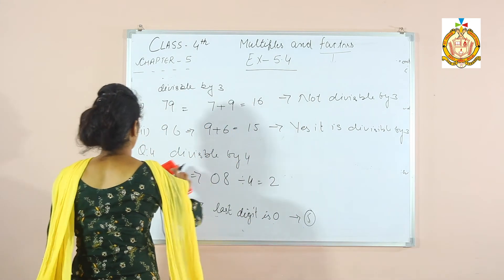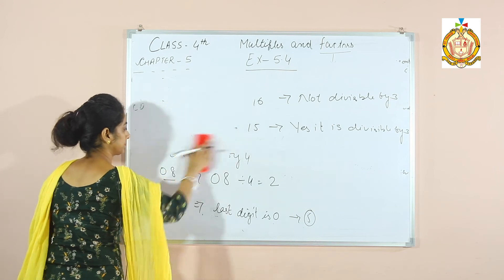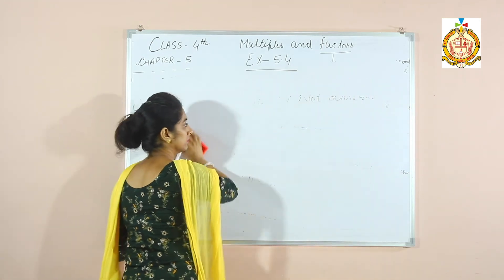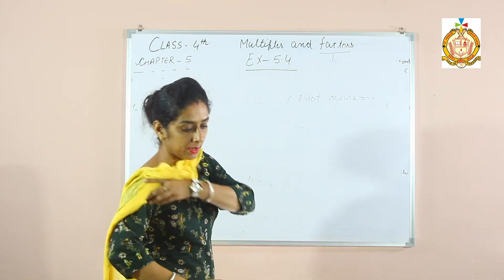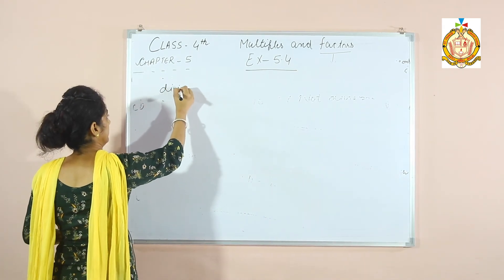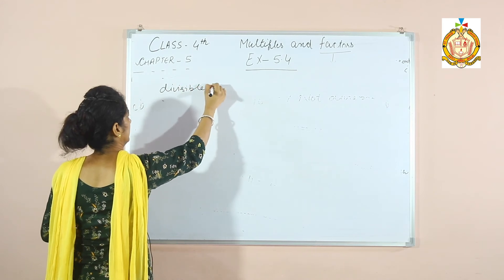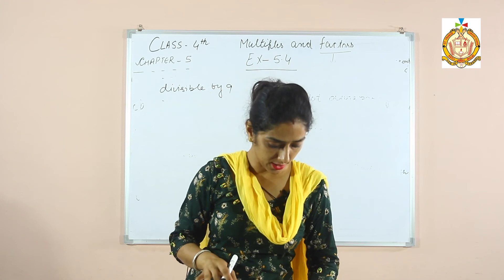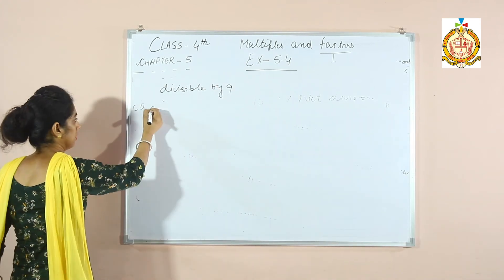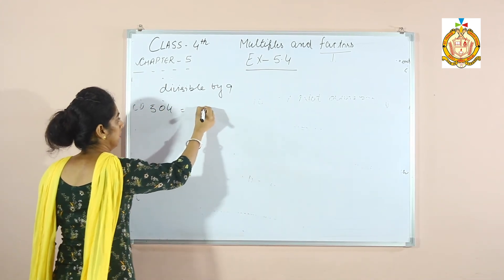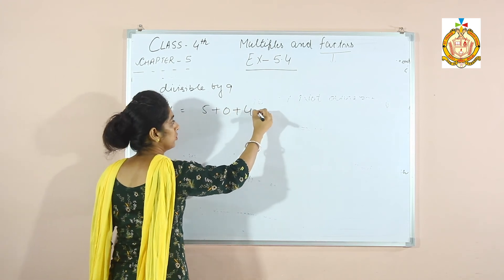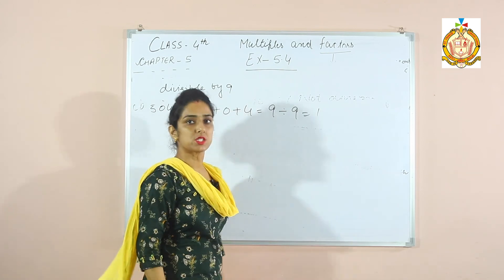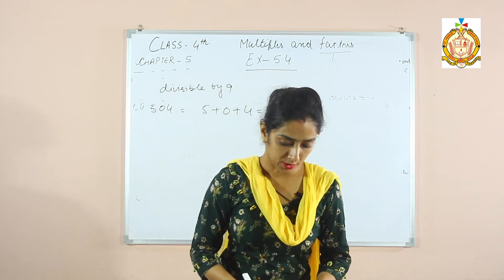For divisibility by 9, we check the sum of digits. For example, 504: 5+0+4=9, and 9 divided by 9 equals 1. So 504 is divisible by 9.